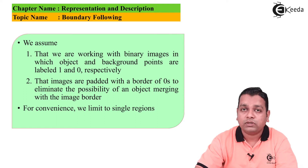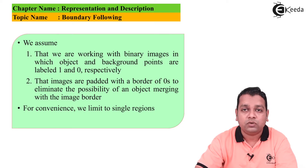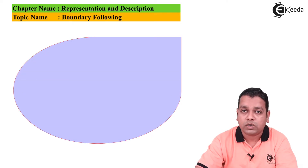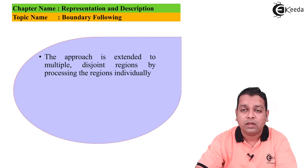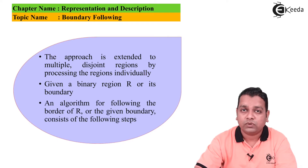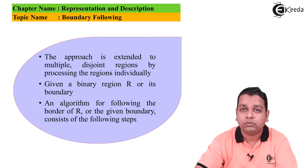We also assume that the images are padded with a border of zeros to eliminate the possibility of an object merging with the image border. For convenience, we shall limit discussion to single regions. The approach of boundary following is extended to multiple disjoint regions by processing the regions individually. Given a binary region R or its boundary, an algorithm for following the border of R consists of the following steps.